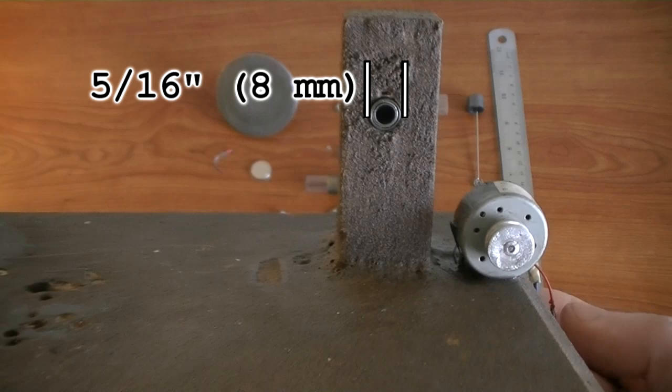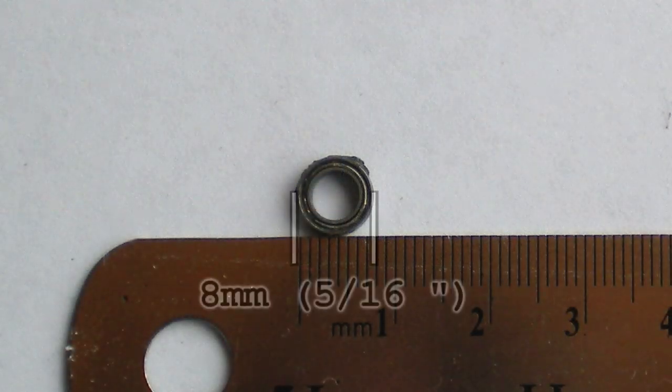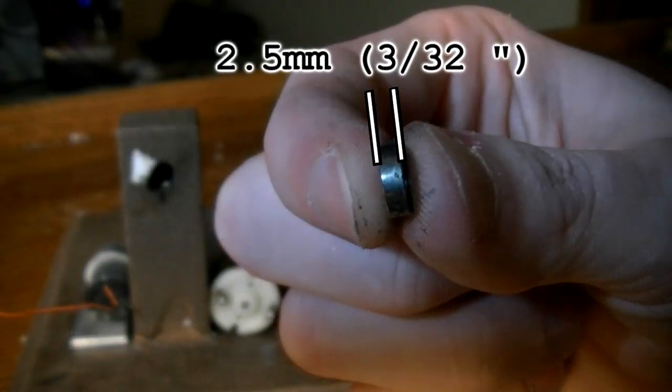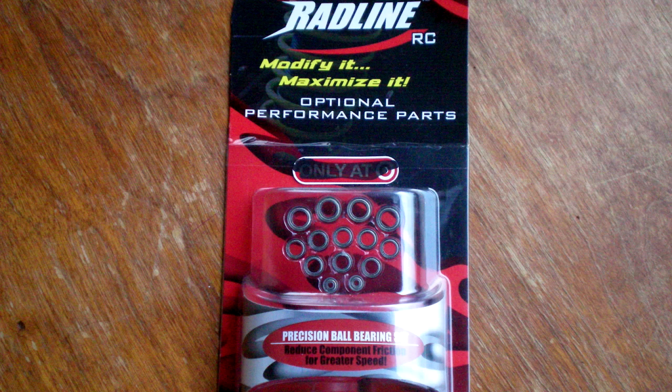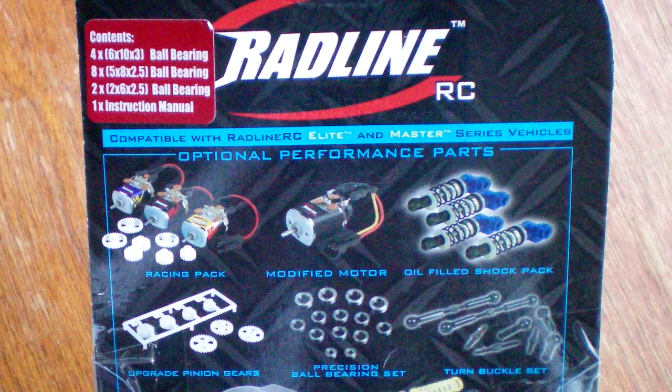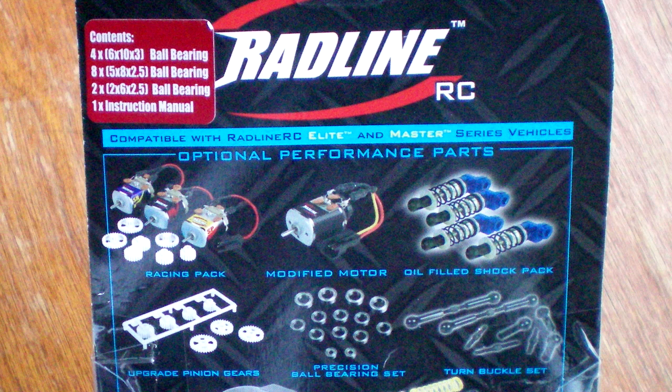I've glued two bearings into the support column. These bearings measure 8 by 5 by 2.5 millimeters. I found these bearings at Target. They are manufactured by Radline for RC cars. Target doesn't seem to sell these anymore but I found another pack on eBay. Hobby shops are a good source for bearings as well.